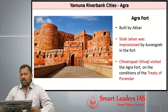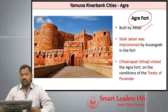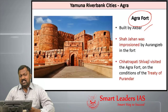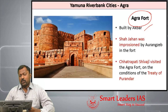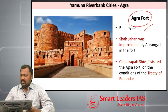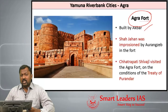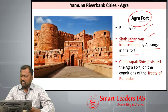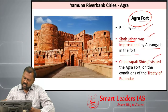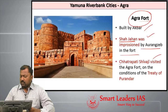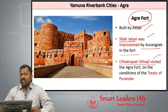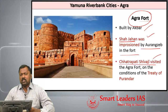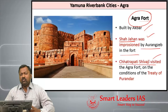Agra Red Fort was built by Akbar, who built a series of Red Forts across India. Shahjahan was imprisoned in this Agra Fort by Aurangzeb and remained imprisoned from 1658 until his death in 1666. An important historical point is that Chhatrapati Shivaji visited the Agra Fort in 1665–66, where he was imprisoned due to some incident. How he later escaped from the Agra Fort is a remarkable historical story worth reading.